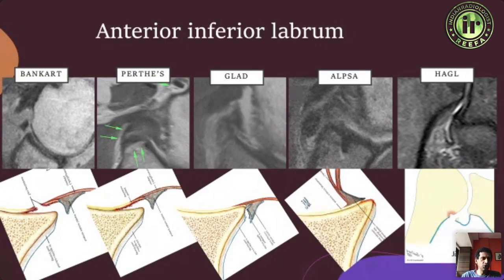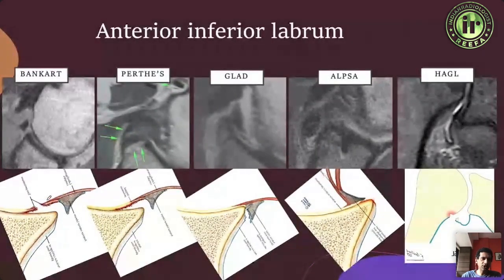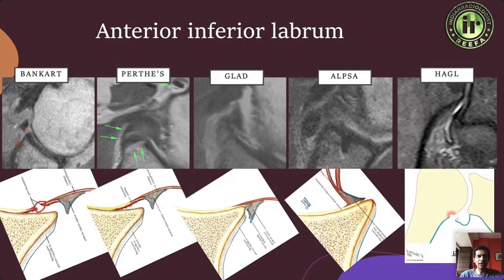Looking at MR appearances of anterior inferior glenoid lesions: the most typical is the Bankart lesion, where the labrum comes off, the periosteum comes off the bone and breaks, the capsule tears — this is your typical soft tissue Bankart lesion. If along with this labrum a piece of bone also came off, you get a bony Bankart lesion.